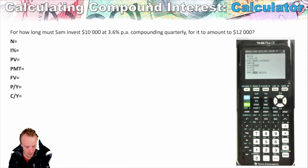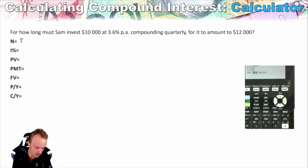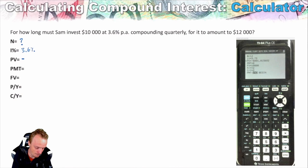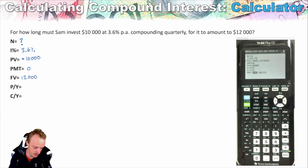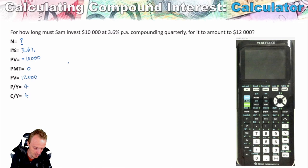For how long must Sam invest $10,000 at 3.6% per annum compounding quarterly for it to amount to $12,000? 'For how long' tells us right away we don't have the time, which means we're actually finding N. The interest rate is 3.6%. The present value is negative $10,000 — putting money into the bank. PMT is zero. Future value is positive $12,000 — pulling that from the bank. P/Y and C/Y are both 4 because it's compounding quarterly.